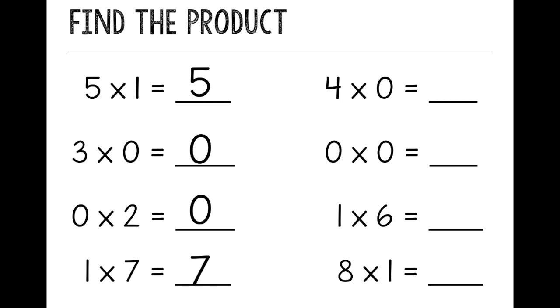On the right-hand side, 4 times 0, if I have 4 groups of 0, I have 0, I don't have anything. 0 times 0, 0 groups of 0 equals 0. 1 times 6, 1 group of 6 equals 6.